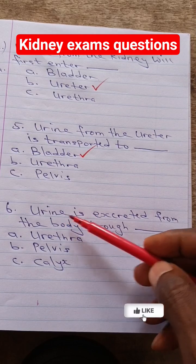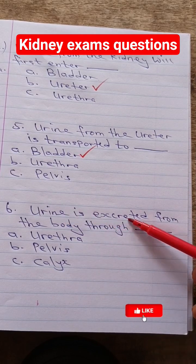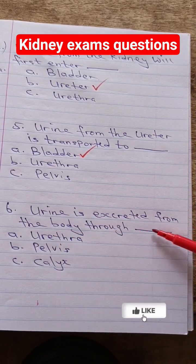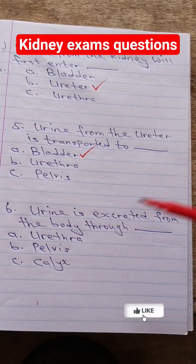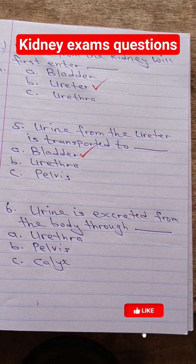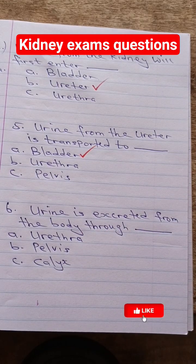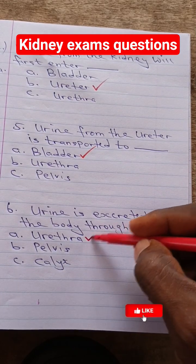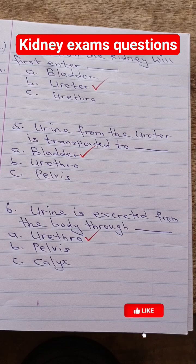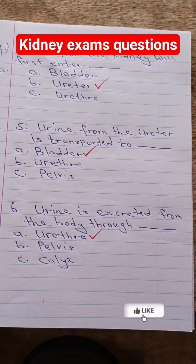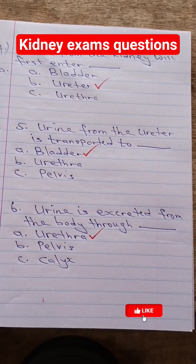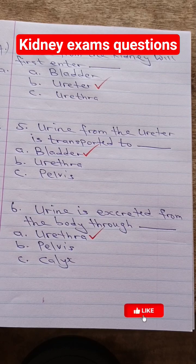Question 6: Urine is excreted from the body through dash. Is it ureter, pelvis, or calyx? Answer: ureter. Subscribe to this channel for daily MCQs about different parts of the body, and don't forget to hit that like button right now.